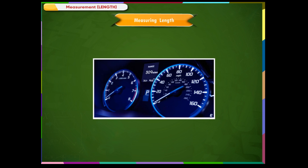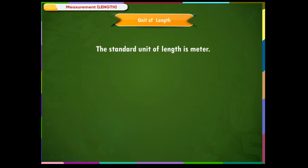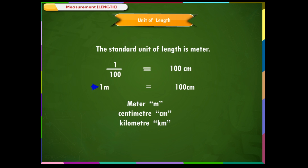The speedometer shows the distances. Units of length: the standard unit of length is meter. 1 meter is divided into 100 smaller units called centimeters. We can also say 1 meter is equal to 100 cm. The short form of meter is m, centimeter is cm, and kilometer is km.